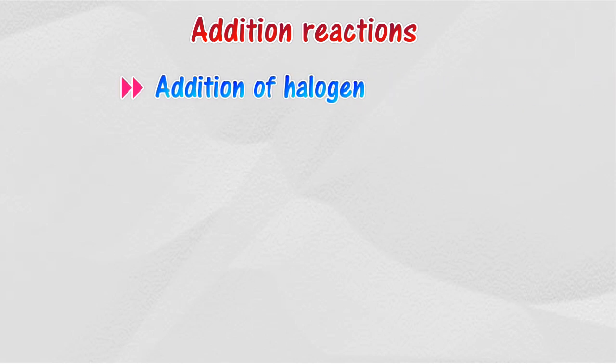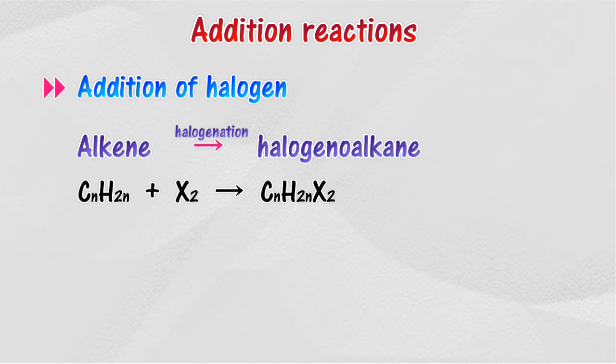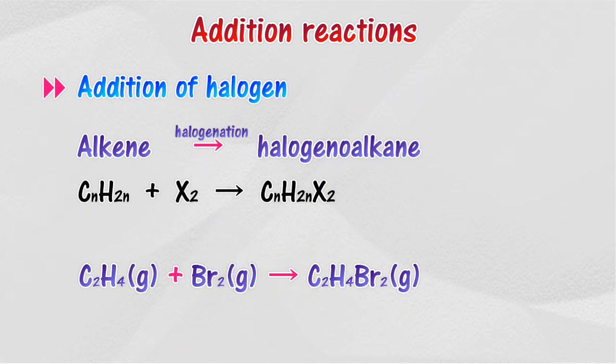Alkenes react with halogens to produce halogenoalkanes. If the halogen used is bromine, then the reaction is bromination. If the halogen is chlorine, then the reaction is chlorination.